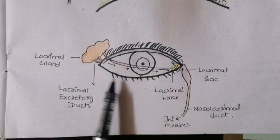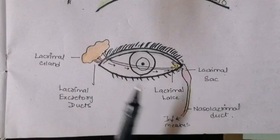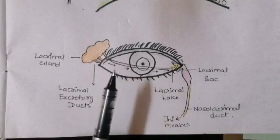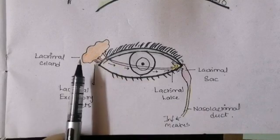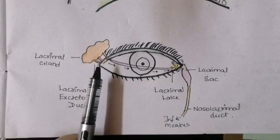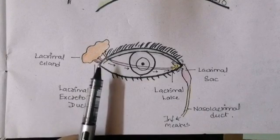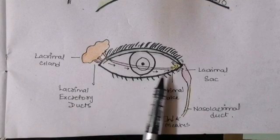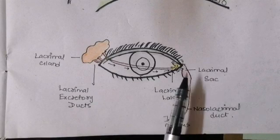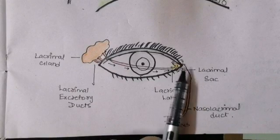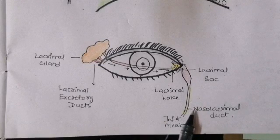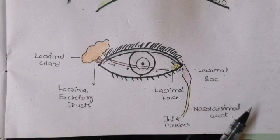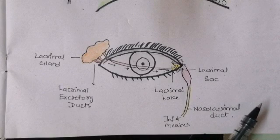To summarize, the lacrimal apparatus begins at the lacrimal gland, drains into the lacrimal excretory ducts, then goes across the eye into the lacrimal lake, then to the lacrimal sac, and ultimately to the nasolacrimal duct that drains into the inferior meatus of the nasal cavity.